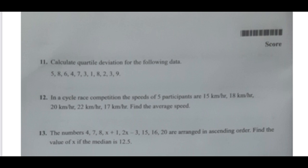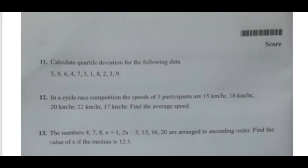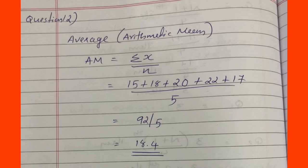The speeds of 5 participants are 15, 18, 20, 22, 17 km per hour. Find the average speed. We use the arithmetic mean. The arithmetic mean equation is: AM = sigma x divided by n.